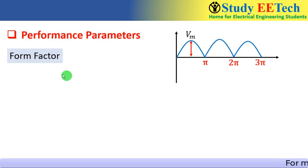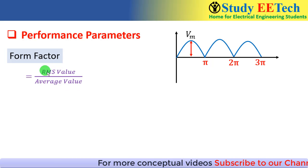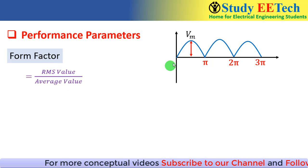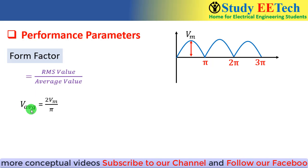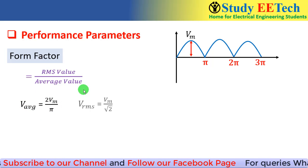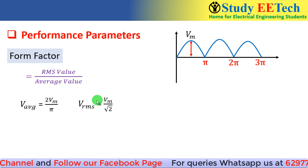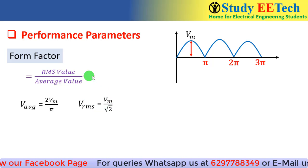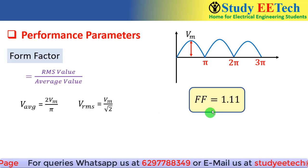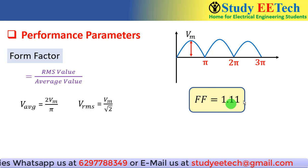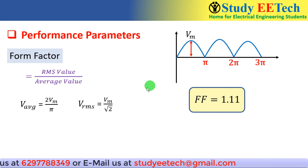Now we will see what is called the form factor. The definition of the form factor is RMS value by average value. You have to always remember this one. This is very important. What is form factor? The RMS value by the average value. By putting the value of V_avg which is 2Vm/π and the RMS value which is Vm/√2, following a simple calculation we will find the form factor to be 1.11. In case of half wave rectifier the form factor value was 1.57. Now the form factor for full wave rectifier is 1.11.